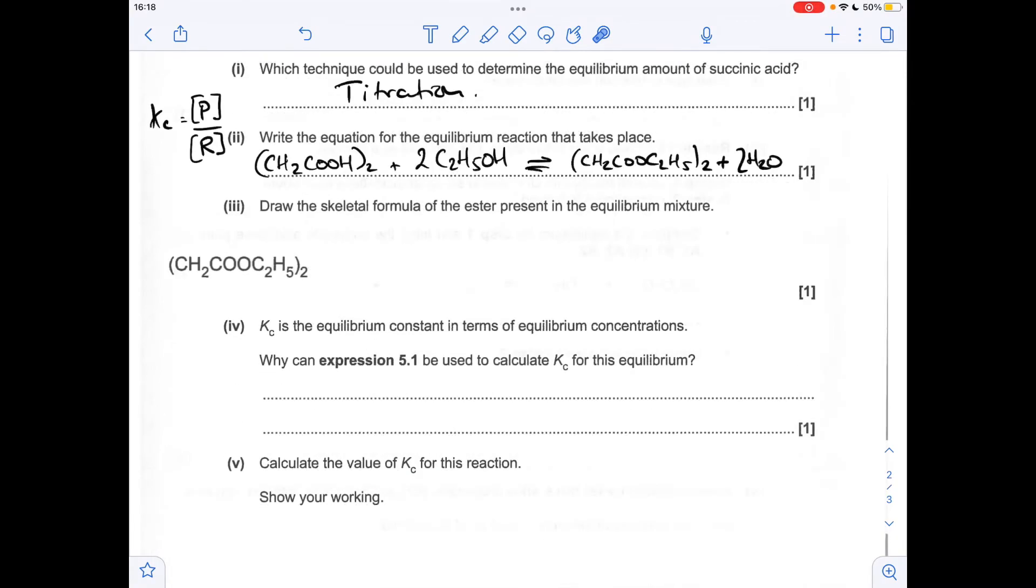So moving on to the skeletal formula for the ester. So there's its structural formula. There's the skeletal formula. Just quickly explain it. If you think about what's inside the bracket, it's basically CH2, C double bond or single bond or CH2, CH3. Now there's the other one there.